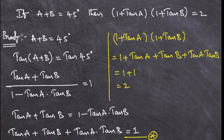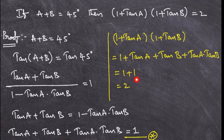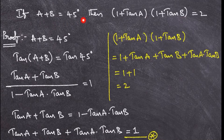From equation star, we know that tan a + tan b + tan a · tan b = 1. So substituting into the expansion, we get 1 + 1 = 2. That's why whenever a plus b is 45 degrees, we can directly write that (1 + tan a)(1 + tan b) = 2.